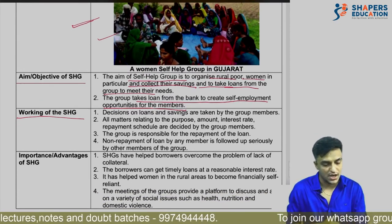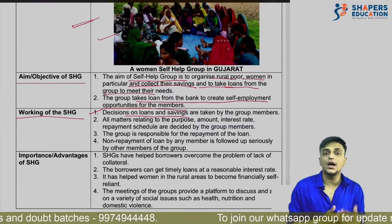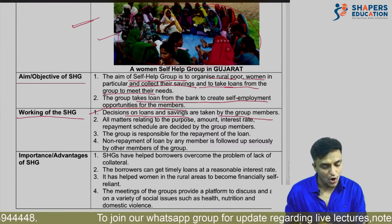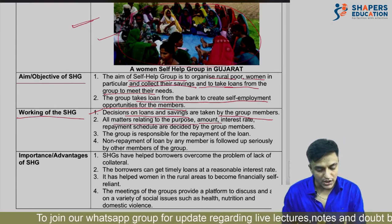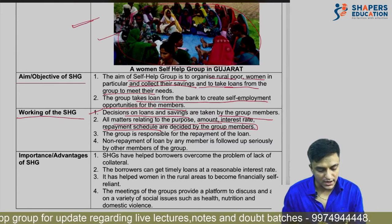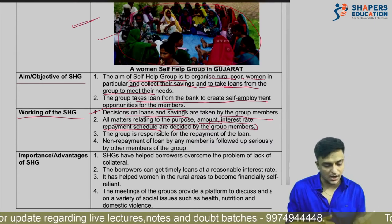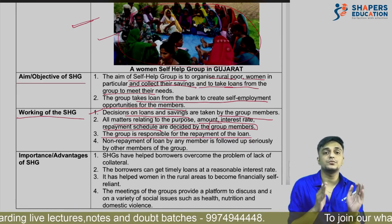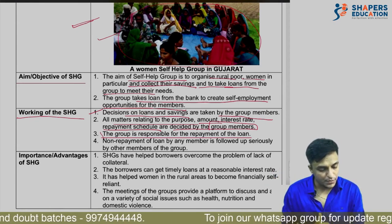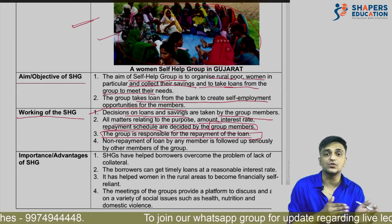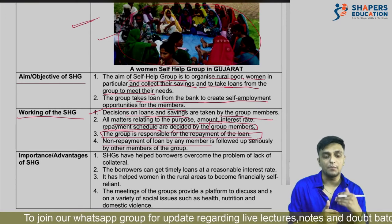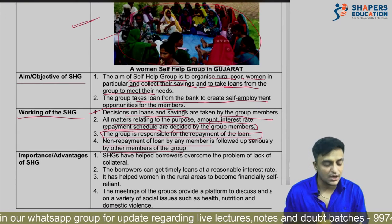How self-help groups function: decisions on loans and savings — how much loan to give, how much savings to collect — are all decided by the members themselves through discussion. All matters relating to purpose, loan amount, collected amount, interest rate, and repayment schedule are decided by group members. The group is responsible for repayment of the loan. If a farmer takes a loan and cannot repay it, the responsibility is not on that individual alone but on the whole group — the group must ensure repayment. Non-repayment by any member is taken seriously.